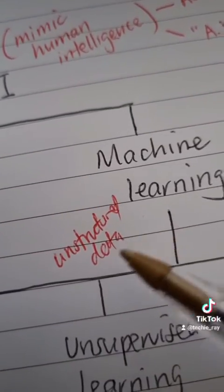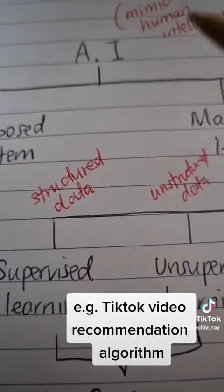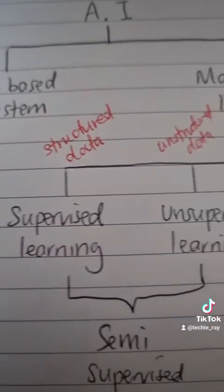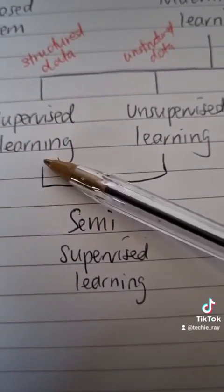Meanwhile, if your data is all unstructured and messy, you can use unsupervised learning. And if you have both structured and unstructured data, you can combine these two to create semi-supervised learning.